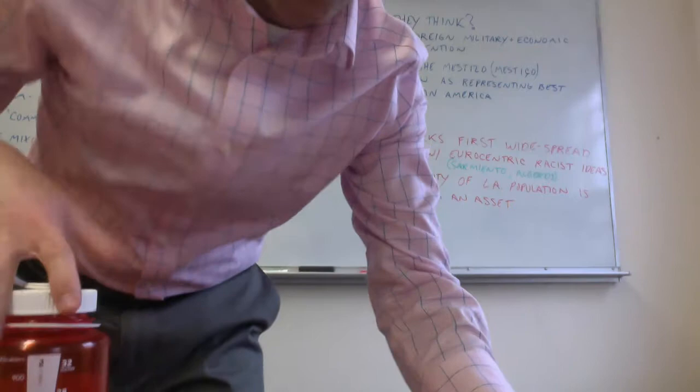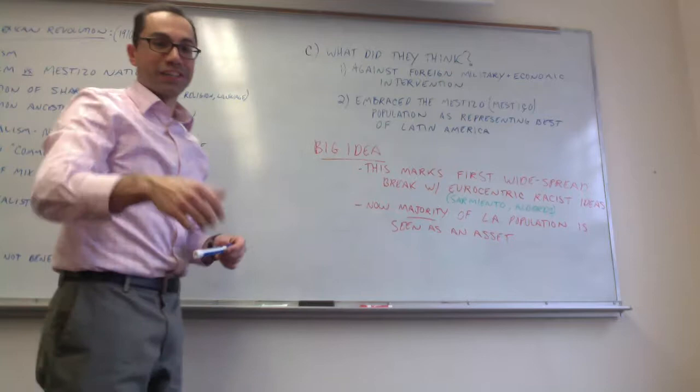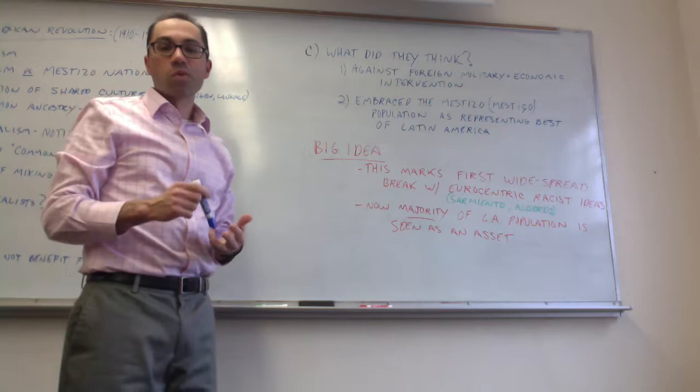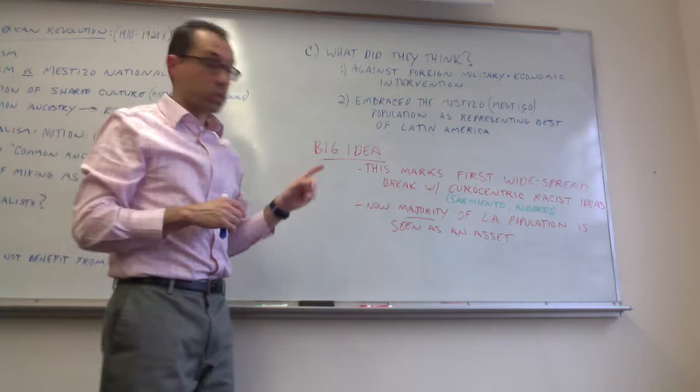Okay, so that's who the nationalists were. Let's talk about what they thought. There we go. Perfect. So, number one, they are against foreign intervention, whether it's economic or military. And we're especially talking here about the United States.